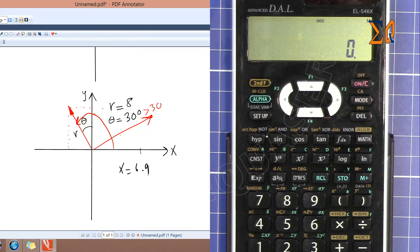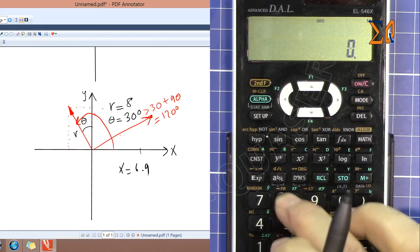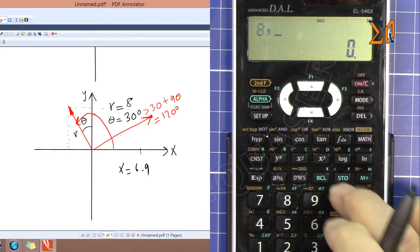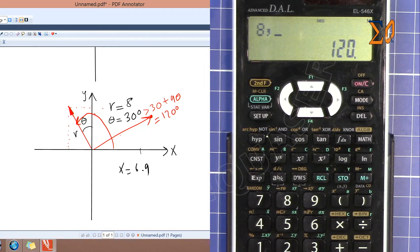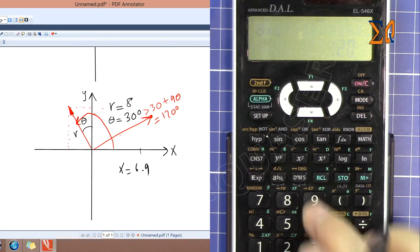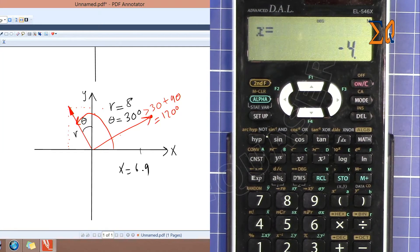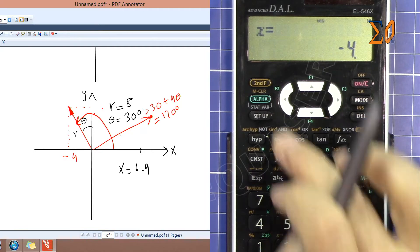From here to here, that is what the system needs to know—the angle. So the actual angle is 30 plus 90, which is 120 degrees. Now let's enter 8 and then comma 120. Now second function and number 9.